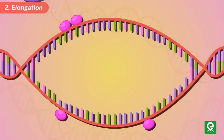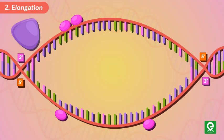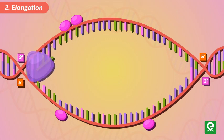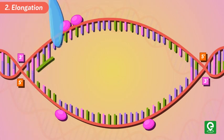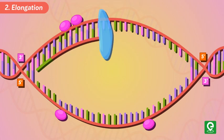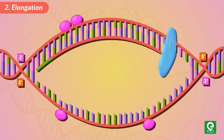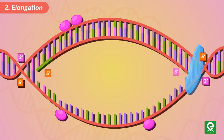Step two — Elongation: The replication fork proceeds in two opposite directions along the DNA molecule. Synthesis of a complementary strand is performed by primase, primers, and DNA polymerases. DNA polymerases can add new nucleotides only to the 3' end of an existing strand, and hence can synthesize DNA in the 5' to 3' direction only.